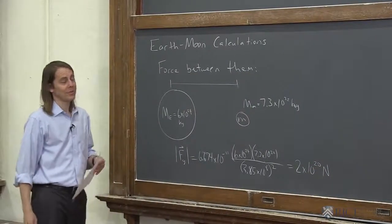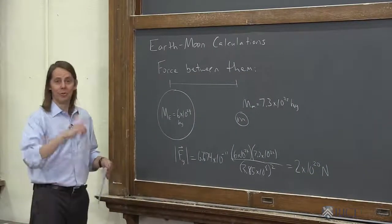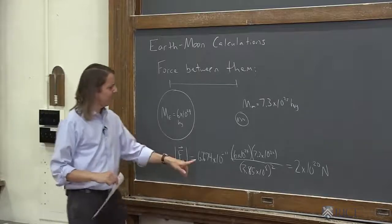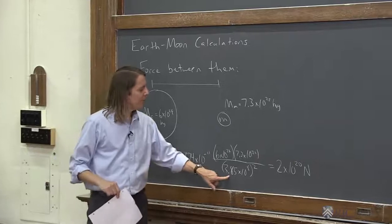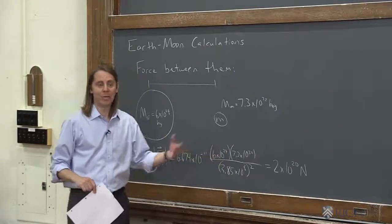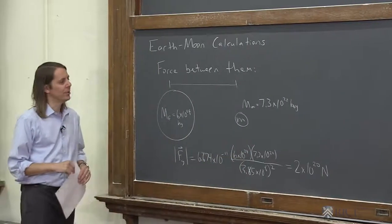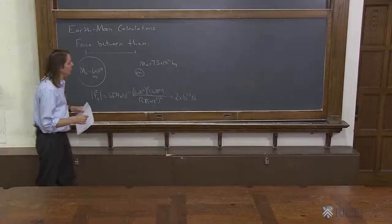That's a big force. Well, it takes a lot of force to pull the Moon in a circle. The Moon's kind of big. The force is big. This number's small. Gravitational forces tend to be weak. It's pretty far apart, but they're really heavy. These are big, massive objects that we're talking about. So 2 times 10 to the 20 Newtons.